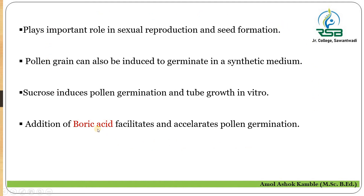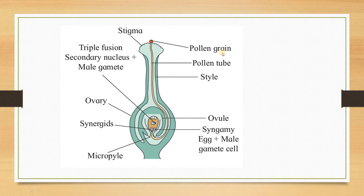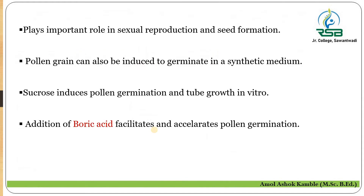In summary, pollen-pistil interaction involves the deposition of pollen grains on the stigmatic surface, where the pollen grain absorbs water, nutrients, proteins, and sugary content. The pollen grain then undergoes germination, forming a pollen tube that travels through the style, enters the ovule, and facilitates the process of fertilization. A question may be asked: describe the mechanism of pollen-pistil interaction.